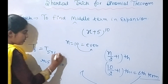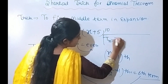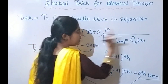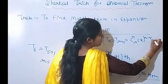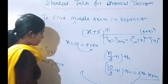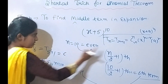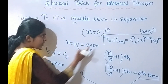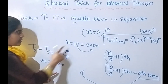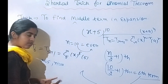So n equals 10. The middle term is T6, meaning r + 1 = 6, so r = 5. Apply the general term: T6 = C(10, 5) · x^(10-5) · 5^5 = C(10, 5) · x^5 · 5^5. The first term is x to the power (n - r) = x^5, and the second term is 5 to the power r = 5^5.